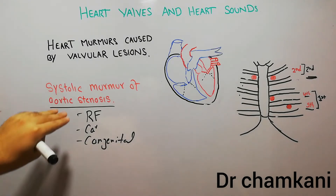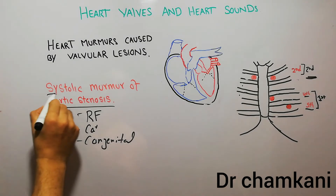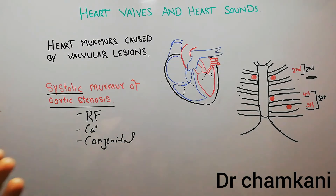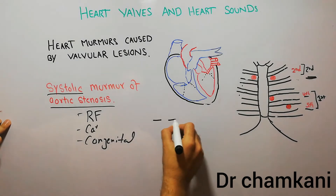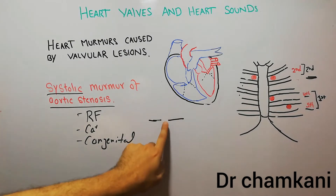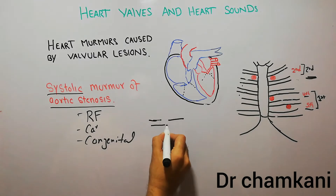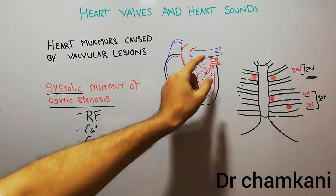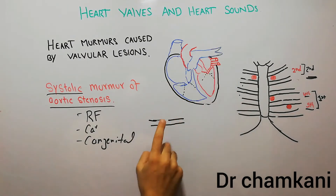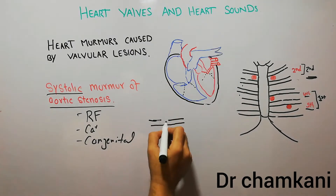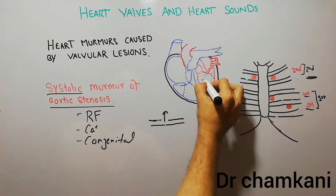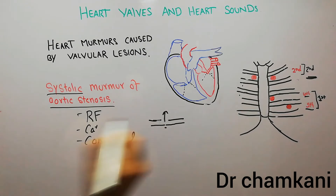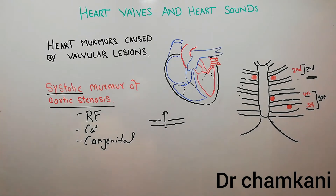Why is the murmur of aortic stenosis systolic? Because in stenosis — as discussed in the previous lecture — the space between the valve cusps is decreased. For example, if this was the normal space when the ventricle is contracting, this much space is available for blood to go out into the aorta. In stenosis, that space is decreased, and it creates a nozzle effect.